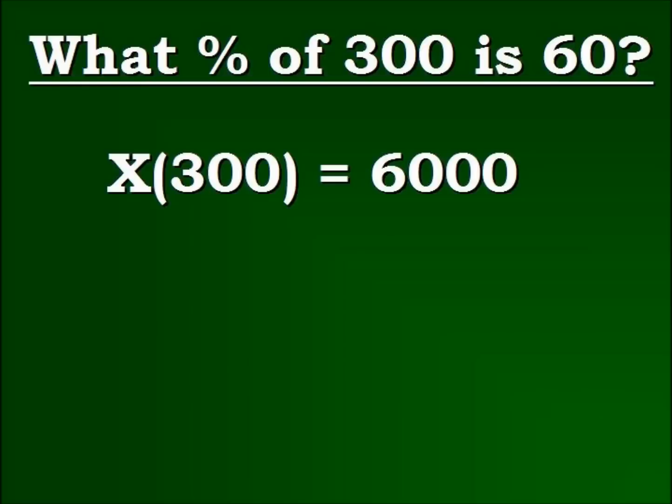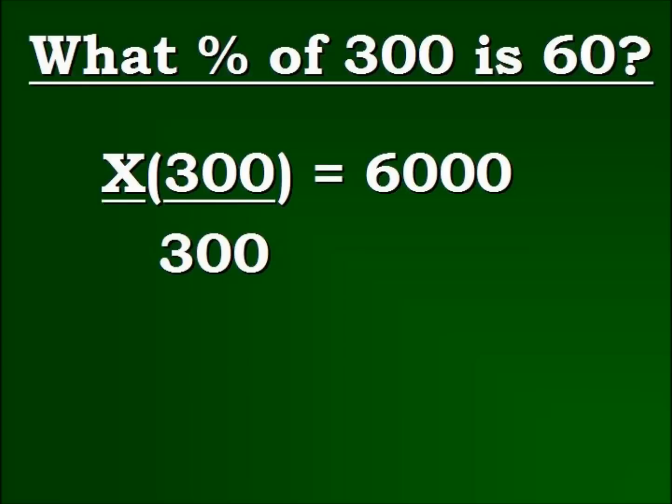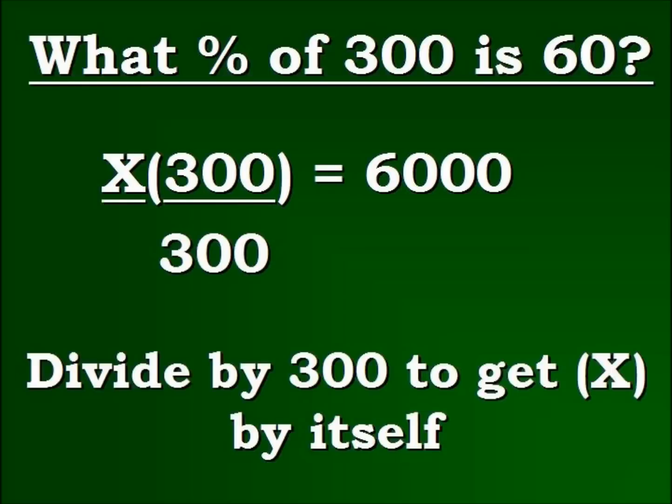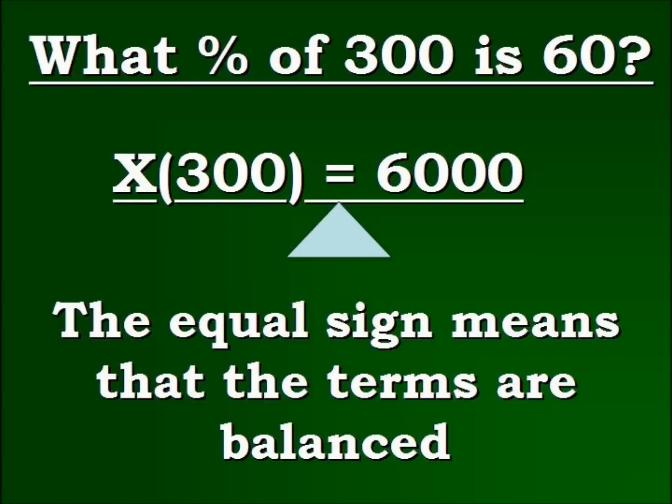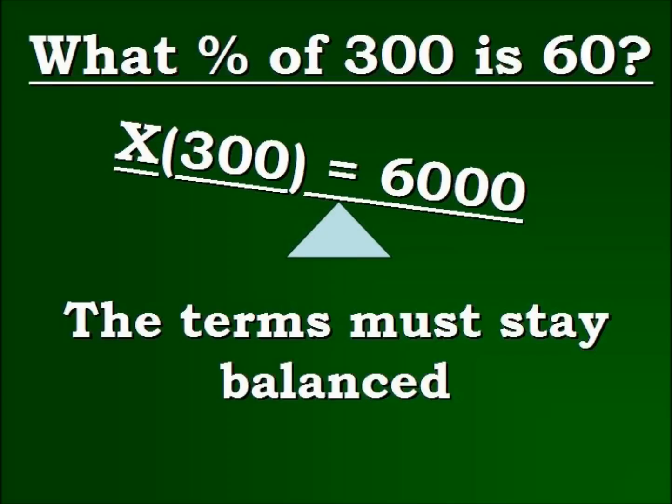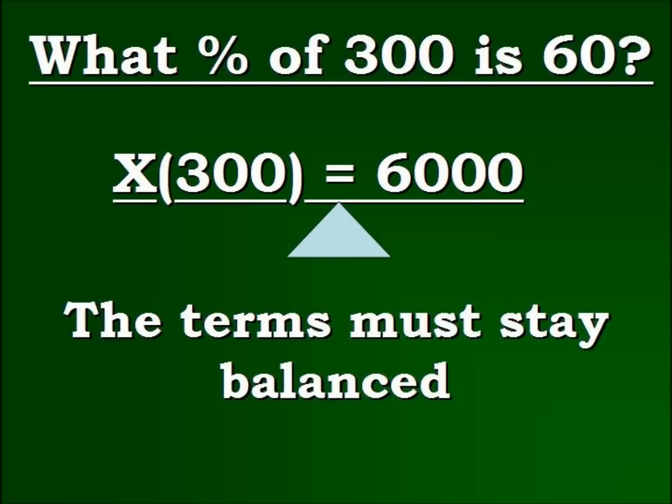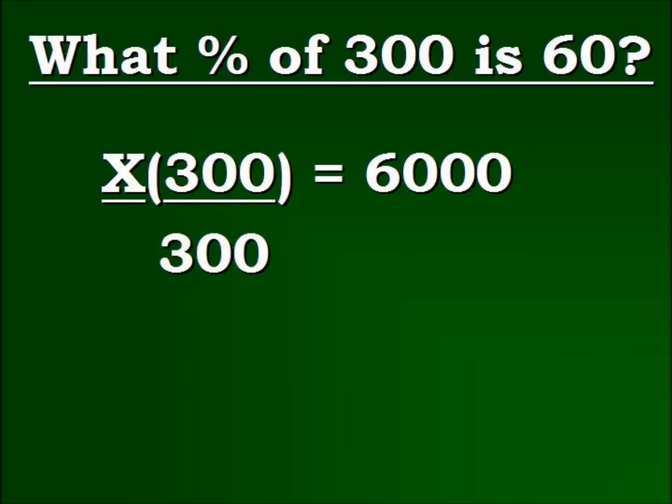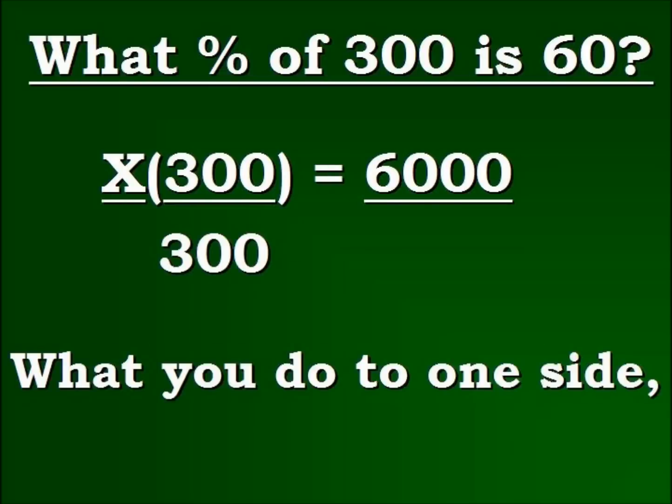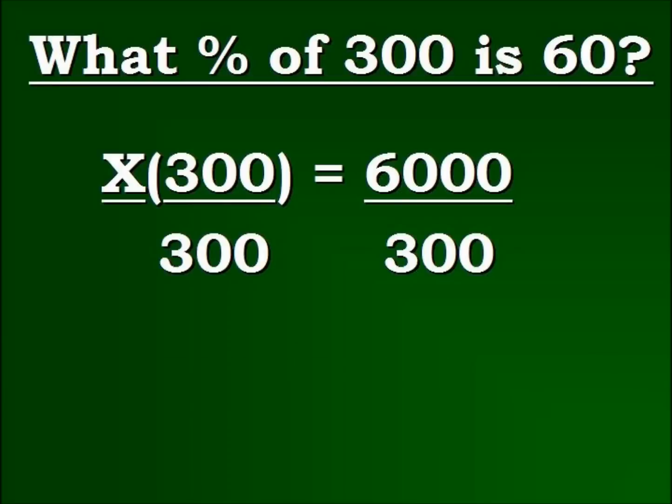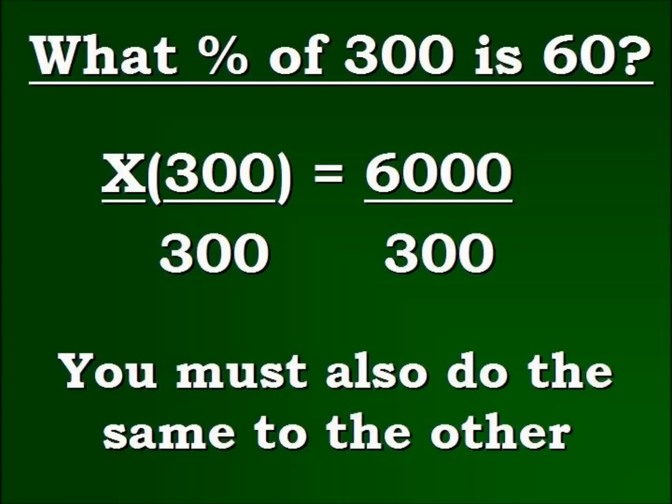We have the equation again. What we're going to do is we're going to divide 300 to get X by itself. Now, as you remember with an equation, there are two equal terms. So, the equation means that the terms are balanced. Whatever you do to one side of the equation, you're going to have to do to the other side to make sure the terms stay balanced. So, since we're going to divide 300 to get X by itself, we're going to have to also divide 300 by the other side. Again, what you do to one side, you're going to have to do to the other to keep the equation balanced.